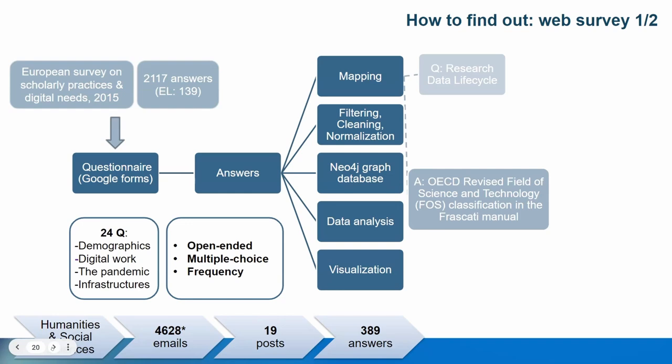In multiple choice questions, answers were designed with careful consideration of participants' diverse scientific backgrounds. The questionnaire was sent to almost 5,000 recipients, and 19 posts were made on websites and social media to increase visibility. Due to each organization using its own contact list, the exact number of cross-postings is unknown. A total of 389 responses were collected.